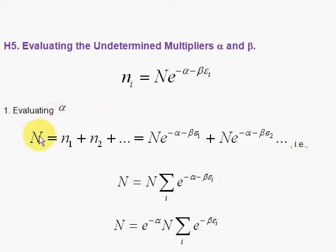Evaluating alpha, we take the total number of particles to be n1 plus n2, etc., the definition of the total number of particles, and we apply our general formula over and over again, where we let i equal 1, i equal 2, etc.